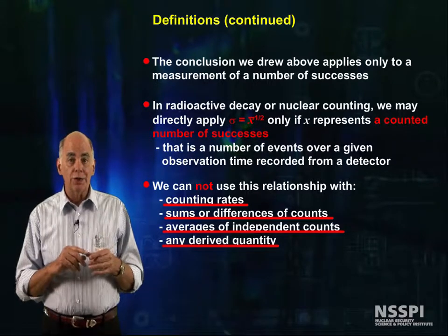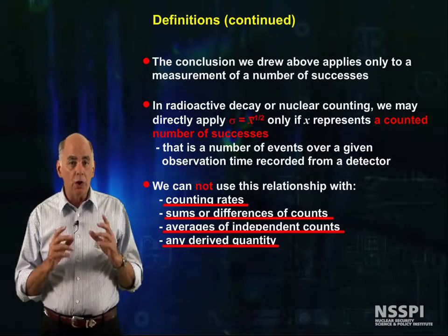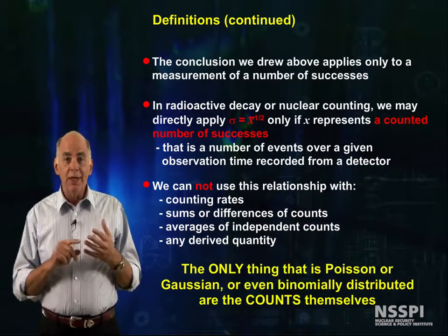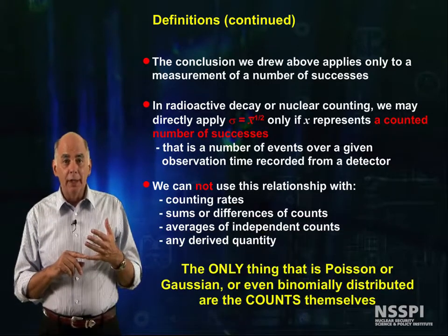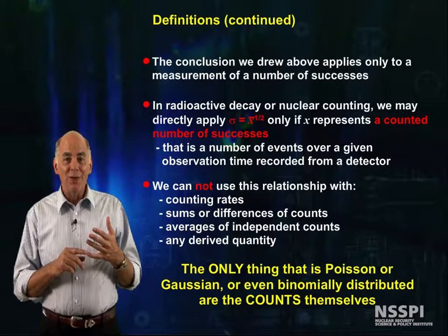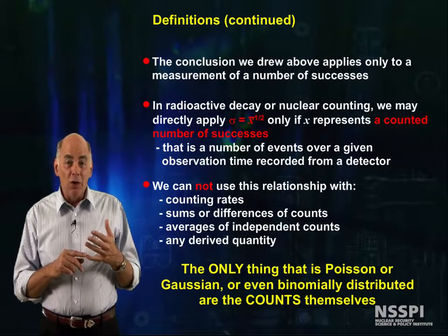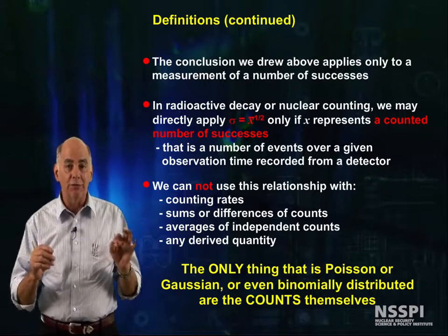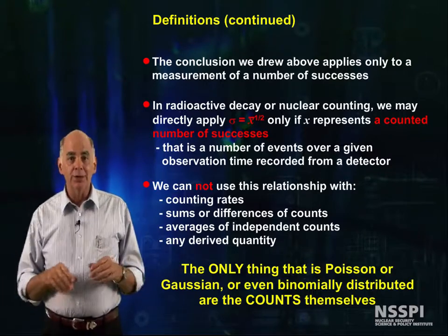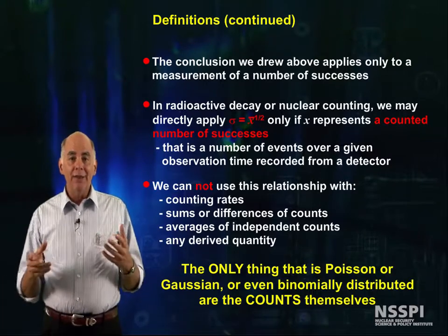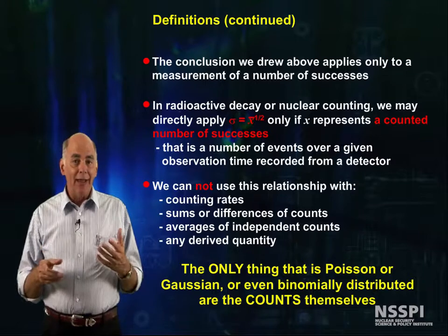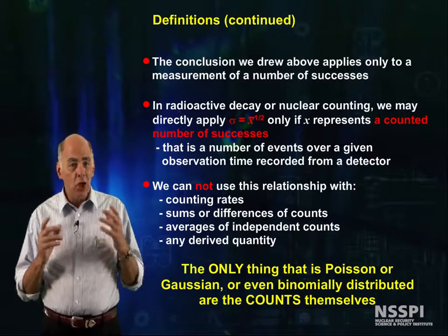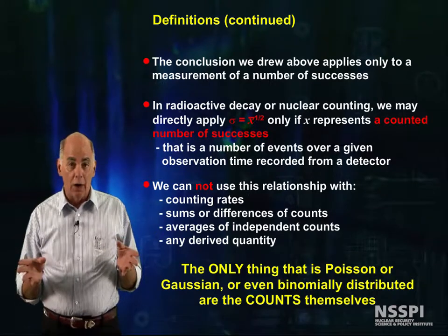Because students miss this concept so often, bear with me and I'll repeat this. The only things that are Poisson, Gaussian, or even binomially distributed are the counts themselves. That's it. As soon as you add them, subtract them, multiply them together, multiply by a constant, divide them, or even look at them hard — all bets are off.